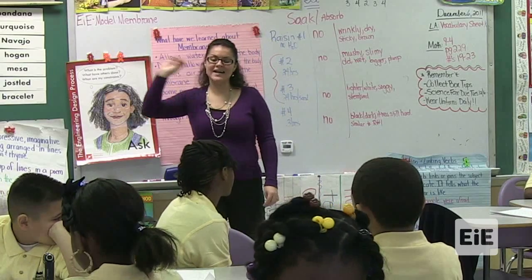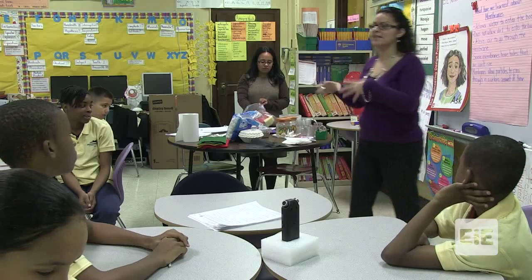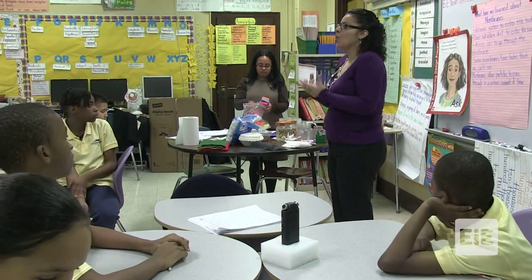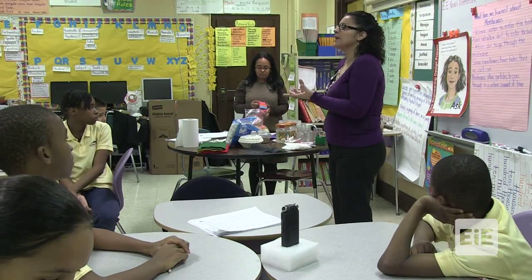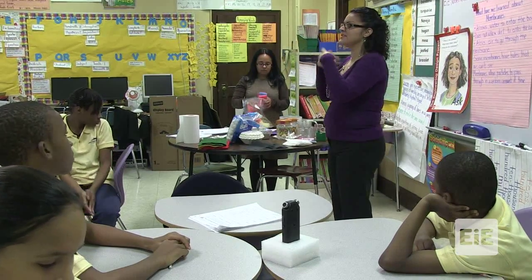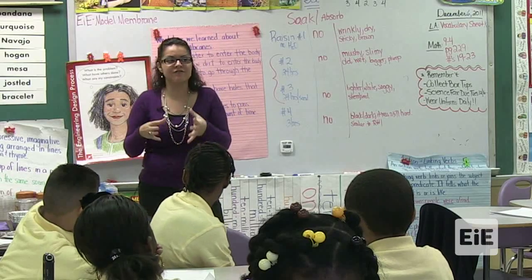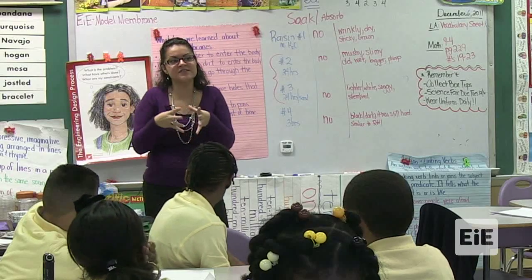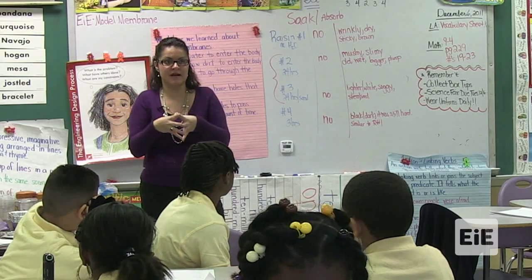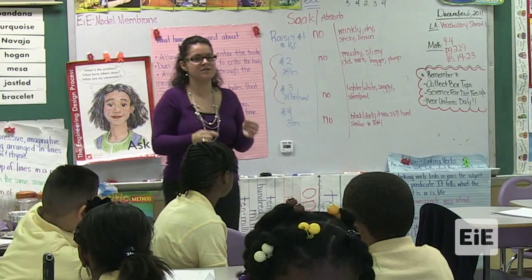Now what we're going to do is — we have a lot of different materials, because remember, before we start building anything we need to know what materials we need to have. Now what do you think would be an important property? Remember, that's how the material acts, what the material does. What would be an important property for your materials to have in order to be successful for your design — meaning it drips enough water on the frog but not too much?